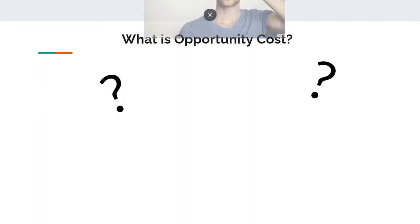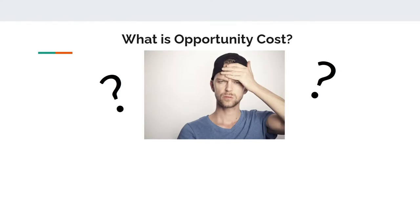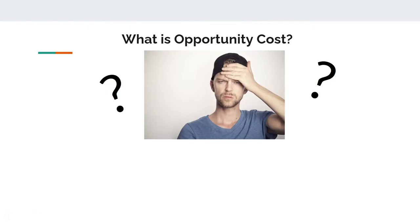So that was an example of opportunity costs. The resource used was time, and the byproduct for each choice could be one seat higher in the boat for one hour of ERGing, and 10 additional points on the next test for one hour of studying.